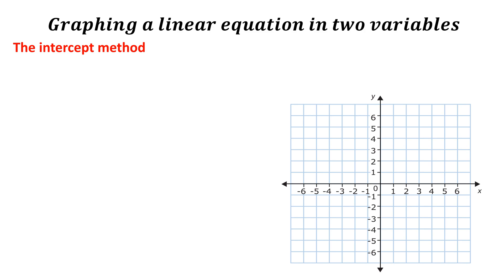Good day, everyone. This is teacher Justina, and our video for today is all about graphing a linear equation in two variables. As we have known, there are three methods in graphing a linear equation in two variables: the first one is the intercept method, followed by the slope intercept method, and the table of values method.